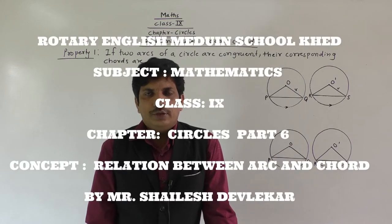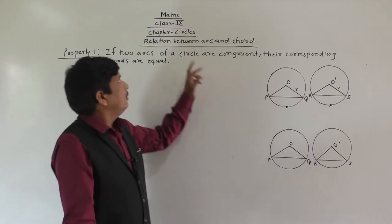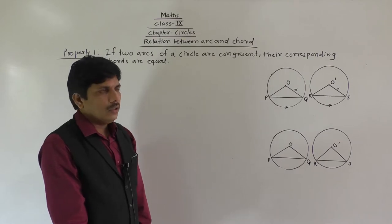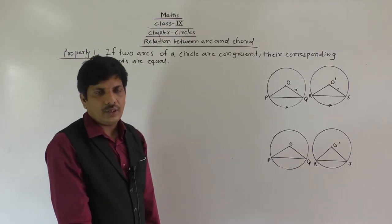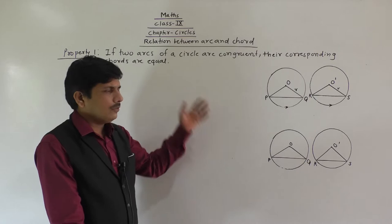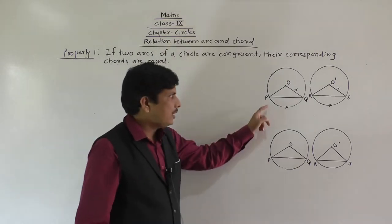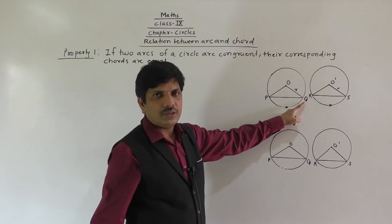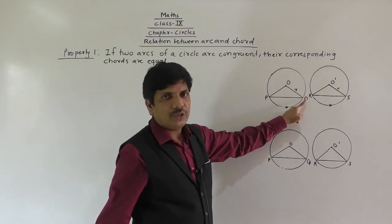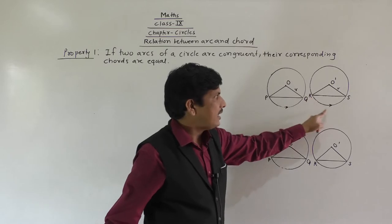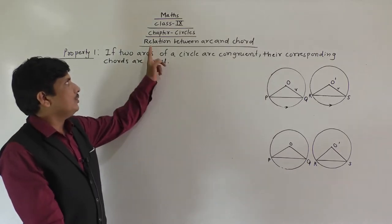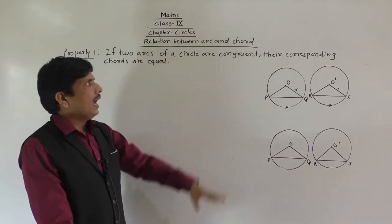Today we are going to see the next point: relation between arc and chord. Arc is the portion of circumference, as we have seen in the introduction, and chord means a line segment joining two points on the circumference. Here, PQ is the chord of the circle and RS is the chord of the circle; PQ is the arc of this circle and RS is the arc of the second circle. On this basis, we are going to see some properties related to the relation between arc and chord.